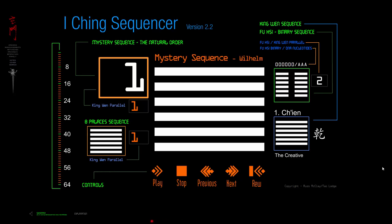I did one of these before, just kind of showing the basics of it, and this is going to be much the same. But what this is, is a way to display several different systems of organizing the 64 I-Jing hexagrams.